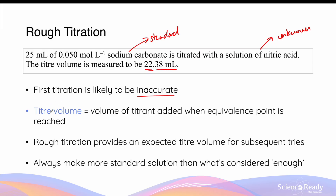It's important to know that the titer volume will not include the rough titration — it will be the volume achieved in subsequent titrations after the rough titration. The 22.38 millilitres is the average titer volume. In any titration, you're expected to repeat the titration at least three times after the rough titration, or until you achieve consistent volumes. An average is then calculated to ensure the reliability of your final results.